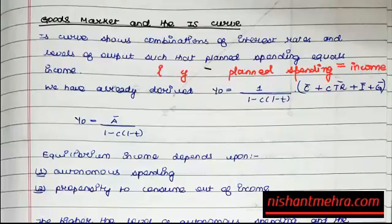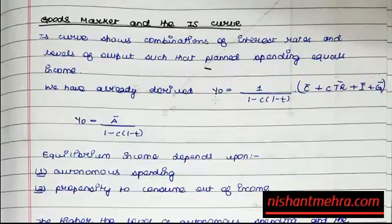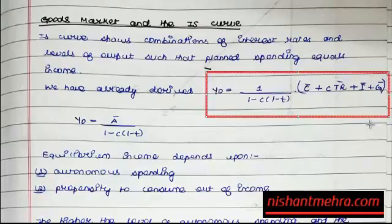We have already derived in the last lecture that y-naught equals c-bar plus c times tr-bar plus i-bar plus g-bar, all divided by 1 minus c times 1 minus t. This is what we derived in the earlier lecture.